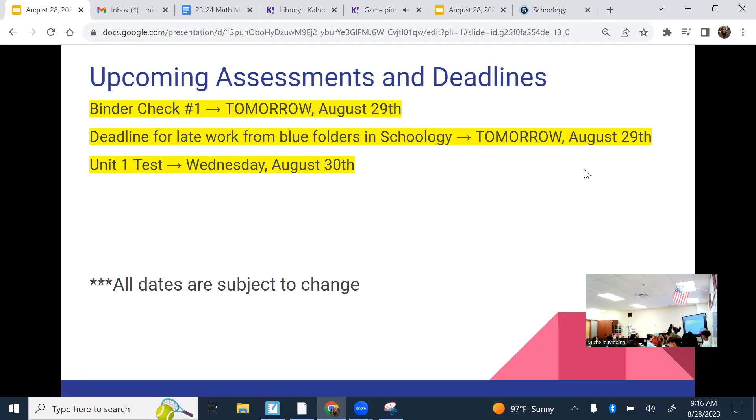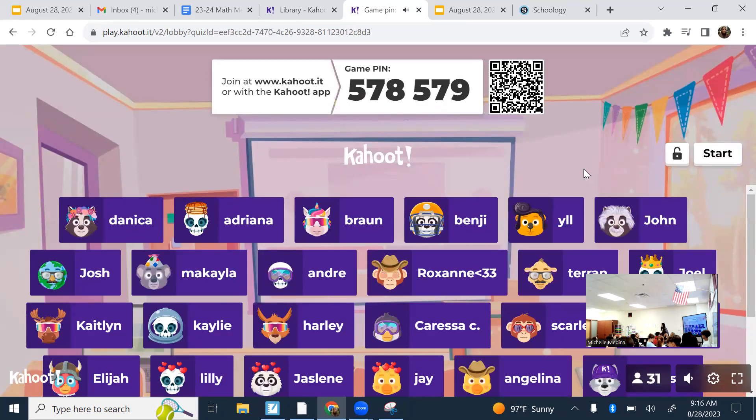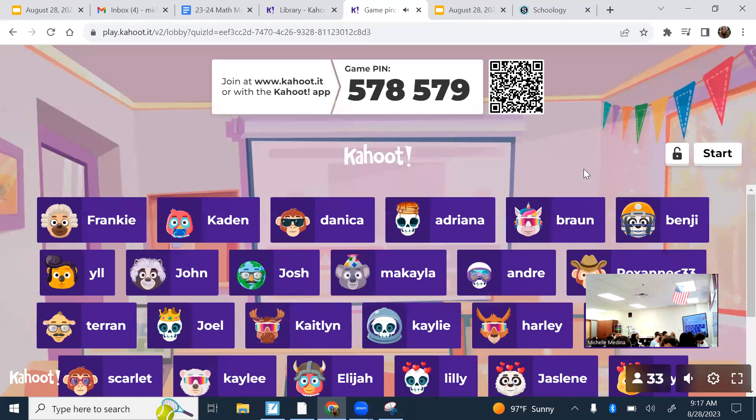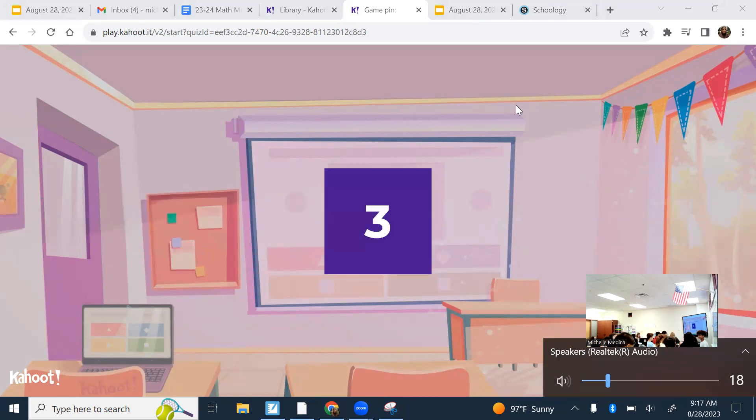I'm going to press start because I gave you a lot of time to enter. The top three people will get their choice of a prize. So the three prizes that I have are five assessment points, a homework pass, and candy. So first place will get first dibs, second place will get second dibs, and so on. I'm going to press start now. So take notes as we go. We are reviewing for unit one.